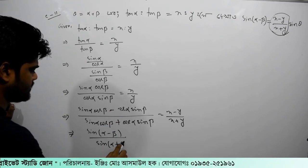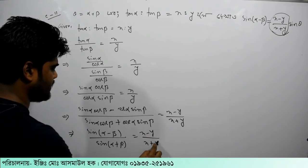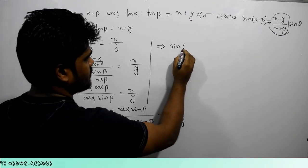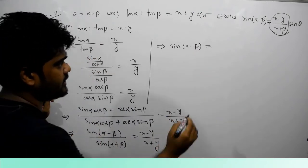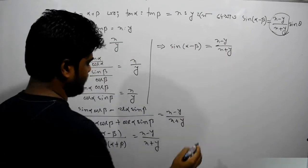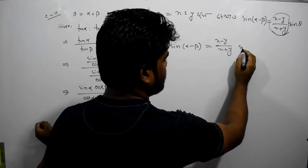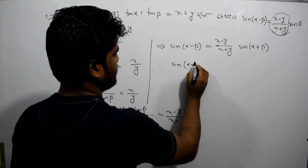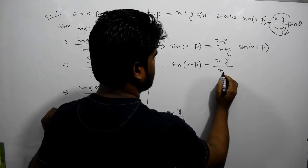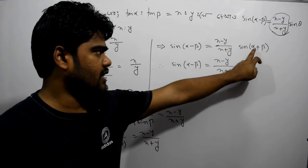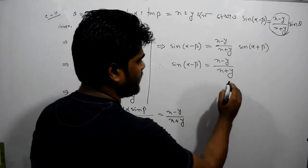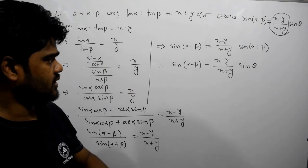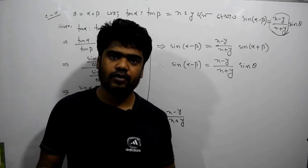So sin alpha minus beta equal to x minus y divided by x plus y. And the initial sin alpha minus beta equal to sin alpha minus beta. So sin alpha minus beta equal to x minus y divided by x plus y. And sin alpha minus beta — alpha minus beta means theta — then sin theta. So sin alpha minus beta equal to x minus y divided by x plus y equal to sin theta, because since we passed back I would go to the same test.